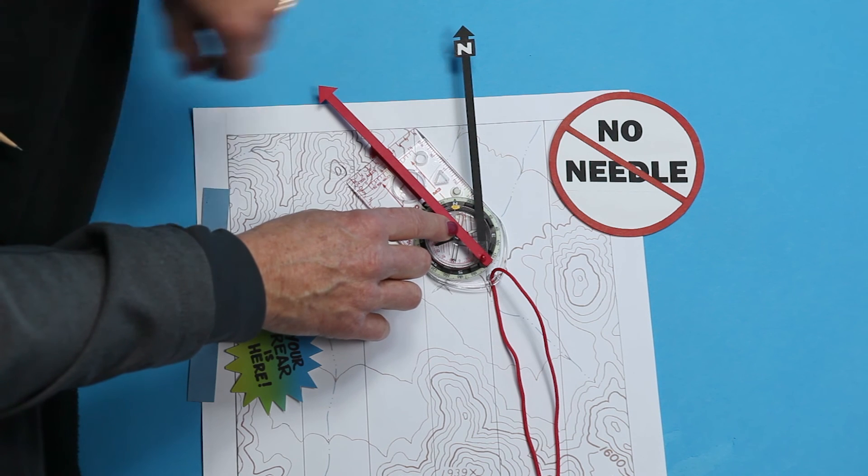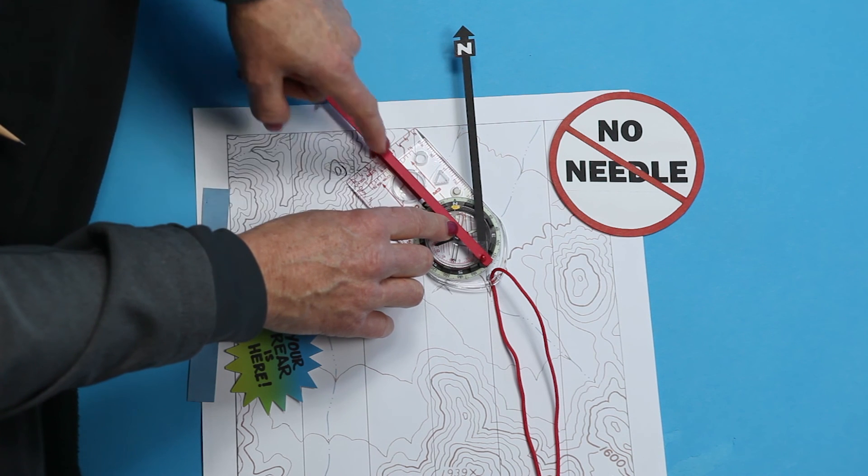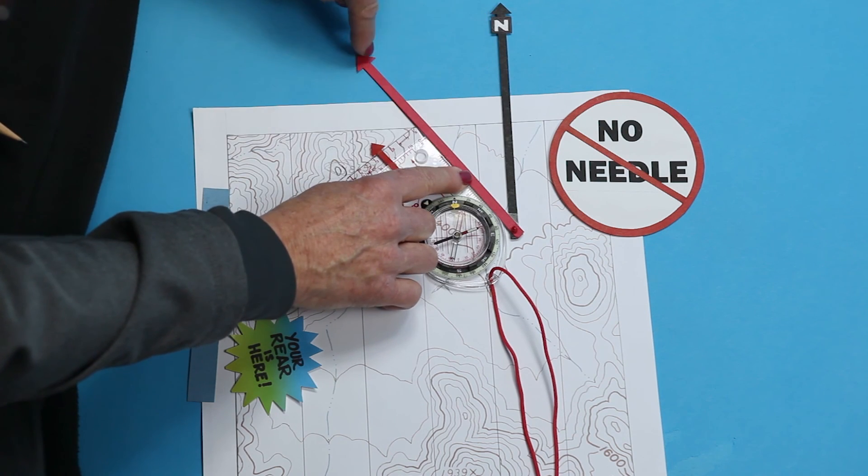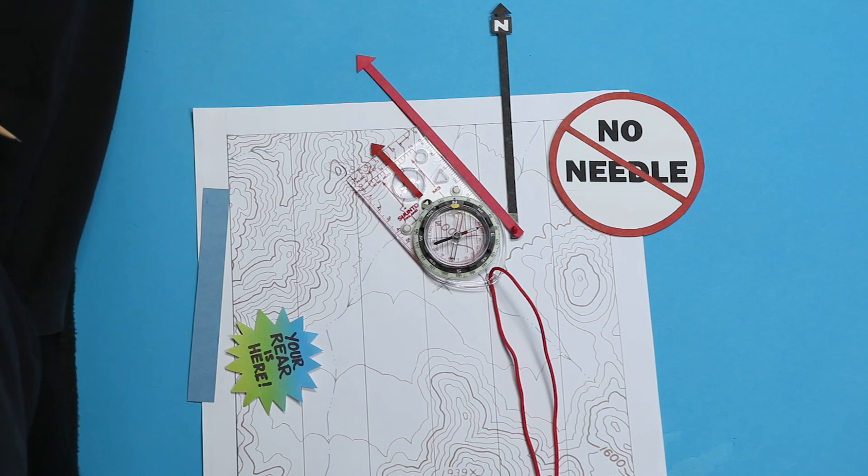Can you see how this is just like taking a bearing in the field, but you're using different parts of the compass? Now that you know how to take a bearing off the map, you can start planning out your next adventure.